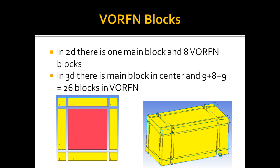So before going to the tutorial, I will give you some basics about the warpframe blocks and the O-gird. Whenever you create the block, you will always see one block on the screen — that's your main root block — but in reality there are 8 warpframe blocks on the sides of the main block in 2D, and there are 26 blocks in the warpframe in addition to the main block.